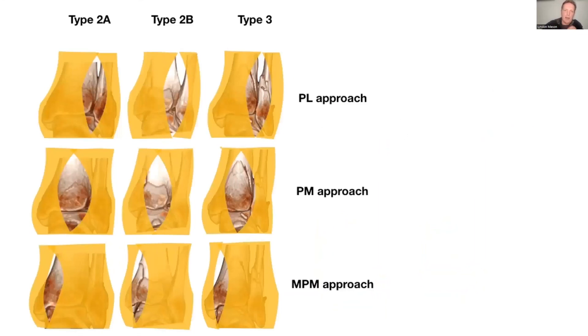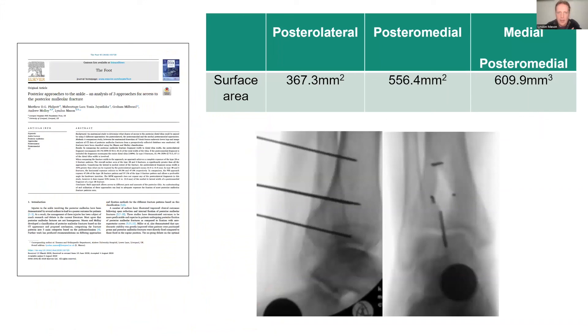This is kind of a schematic of how much you can see. You can see your Type 2A—yes, you can see your fibula and your posterolateral fragment very easily. But you get to your Type 2B, you can't get to that medial side. This is one that Matt was involved with, and you can see that the medial posteromedial also gives you a much larger access to the tibia than the other incisions.